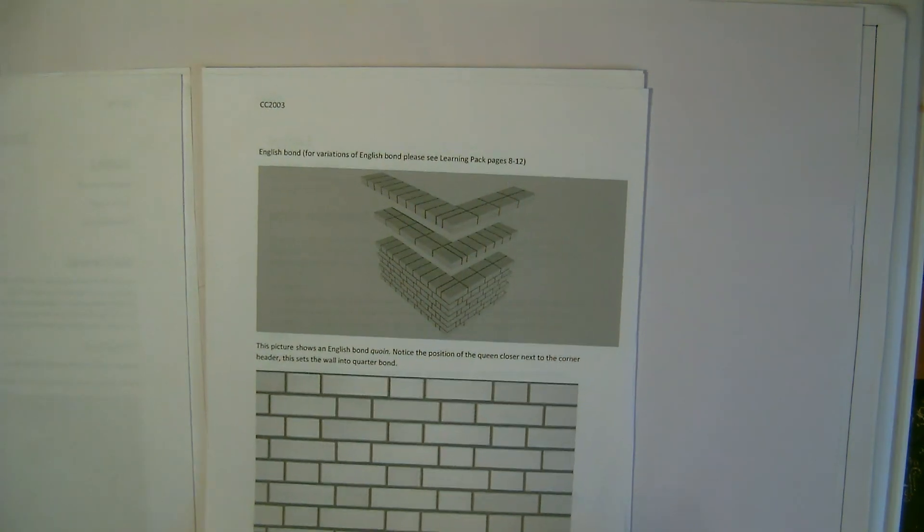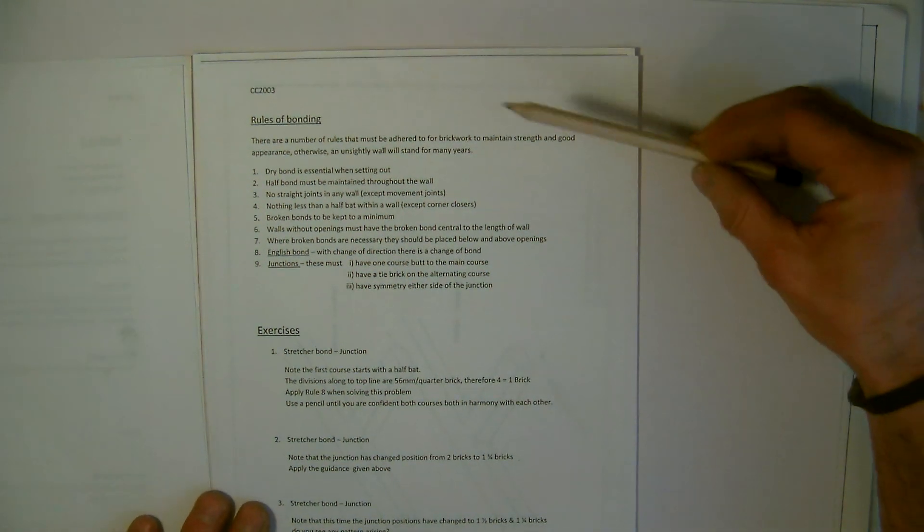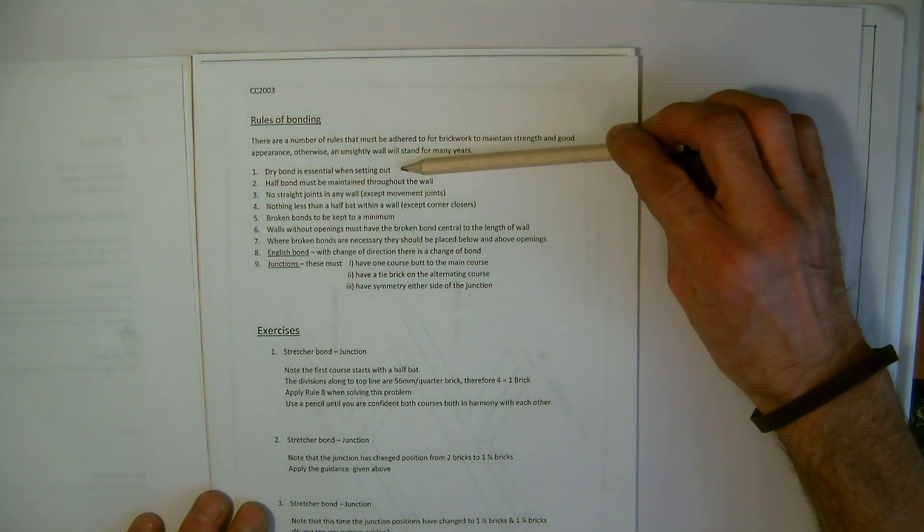If we just first of all familiarize ourselves with a couple of the rules of bonding that we have, we go to section two here and we have the rules of bond. You probably won't be able to read that from there, so I'll just say the first rule of bonding that we have is about dry bond being essential.